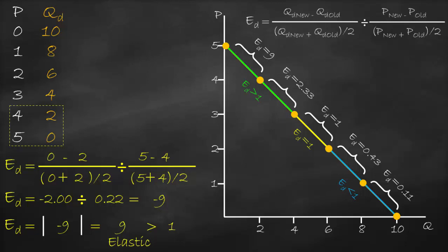Based on this numerical example, we can prove that a product can be relatively elastic at a higher price, relatively inelastic at a lower price, and unit elastic at the point between the relatively elastic and relatively inelastic regions.